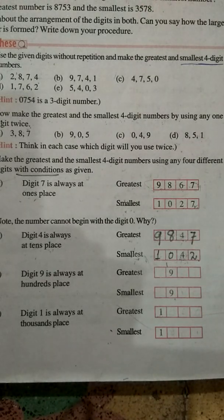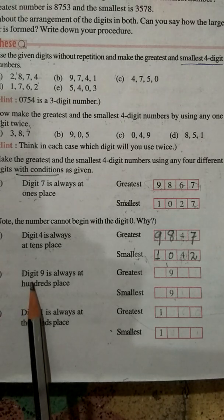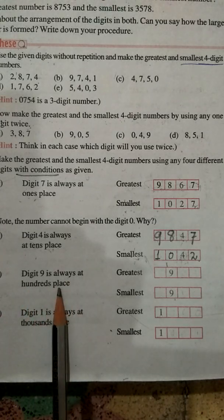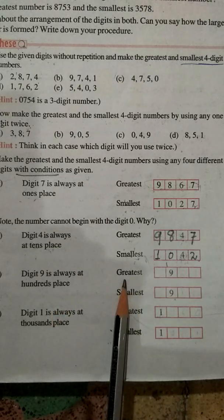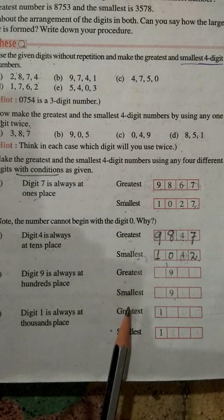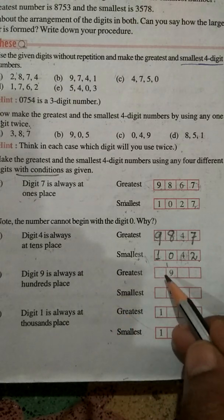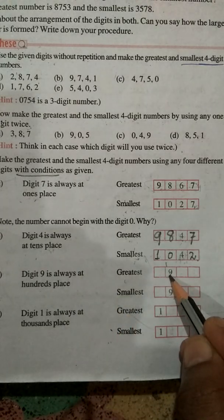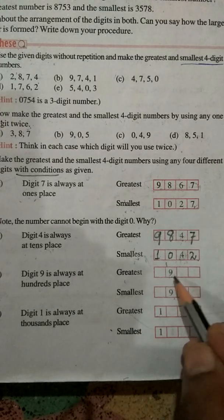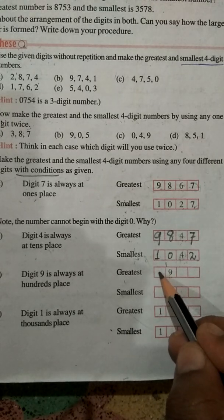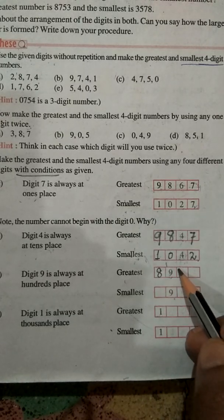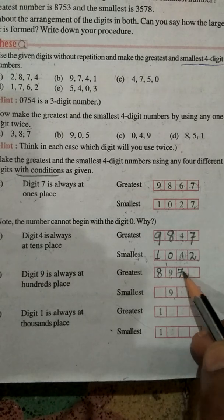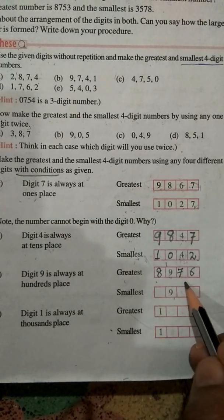The next question tells you to keep digit 9 always at the 100s place. Keeping 9 at the 100s place, we have to form the greatest 4-digit number. We have already written 9 at the 100s place, so we can't repeat it. The next greater digits are 8, then 9 is fixed, then 7 and 6. So the greatest number becomes 8, 9, 7, 6.